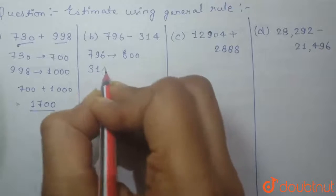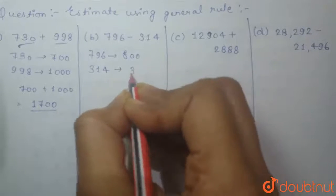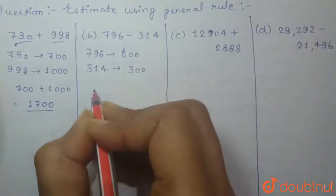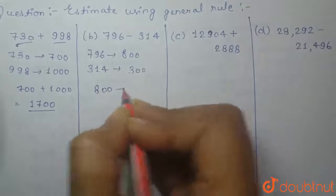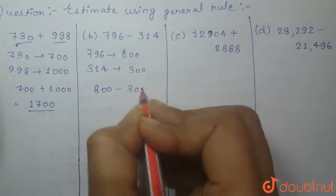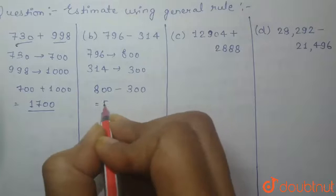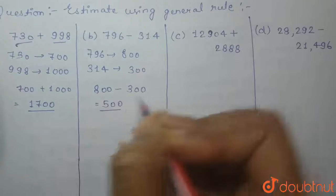Now we can easily subtract 300 from 800, which will give us 500. This is our second answer.